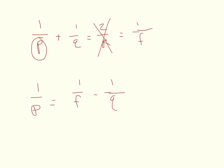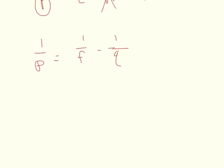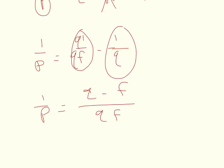Then I want to find the common denominator and so I'll get 1 over P is equal to Q minus F over QF. Now how I did that I multiplied this term by Q over Q so I got Q over QF. I multiplied this term by F over F so I got F over QF common denominator and I just simply combined it Q minus F over QF.